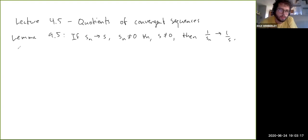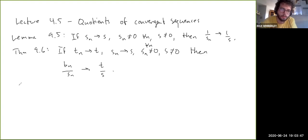If Tn approaches T, Sn approaches S, Sn are not equal to 0 for all n, and S is not equal to 0, then Tn over Sn approaches T over S. Here's the proof: Tn over Sn equals Tn times 1 over Sn.